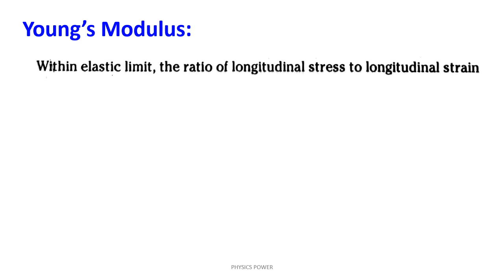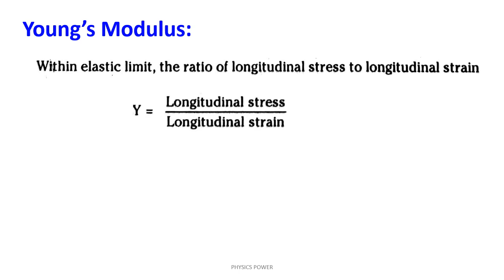First type: Young's modulus. Within the elastic limit, the ratio of longitudinal stress to longitudinal strain is called Young's modulus, denoted Y. Longitudinal stress is force per area; longitudinal strain is change in length by original length. Rearranging, Young's modulus Y equals FL divided by A into delta L, where F is force, L is original length, A is cross-sectional area, and delta L is the elongation.